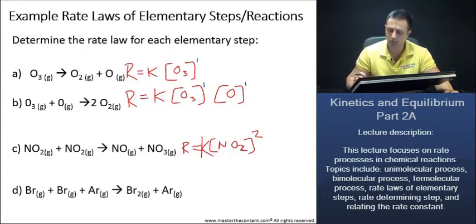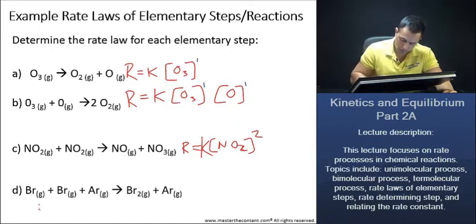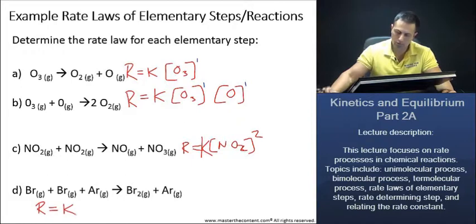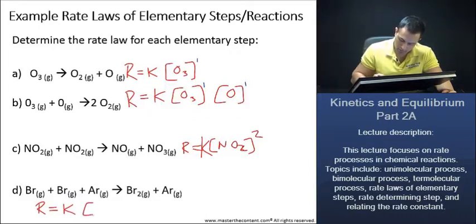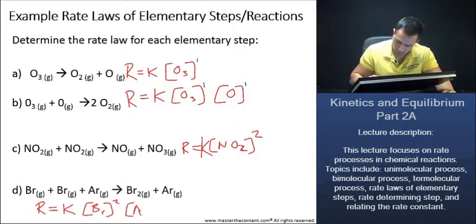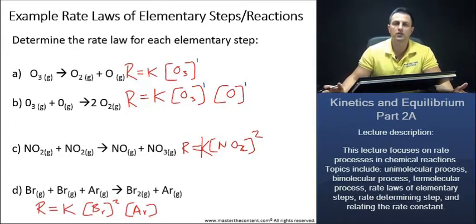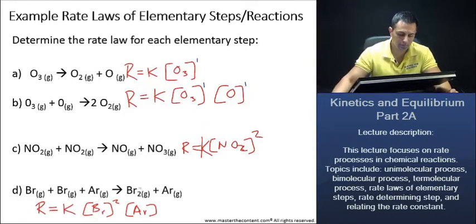Moving on, what do we have here in our reactants again? We have bromine and a bromine and an argon gas. So we can just put bromine to the second power and just place argon there. And that's it. Just as simple as that for the rate law for elementary steps. Okay, great.